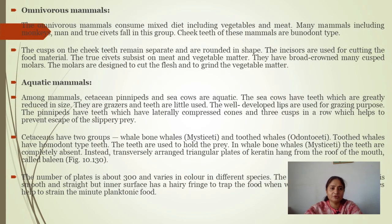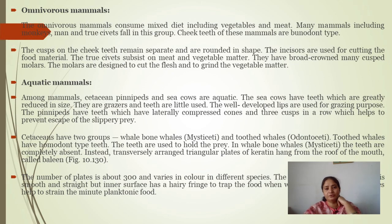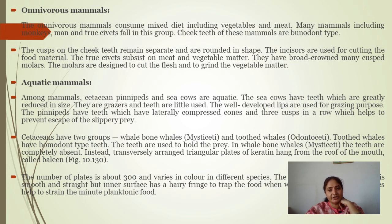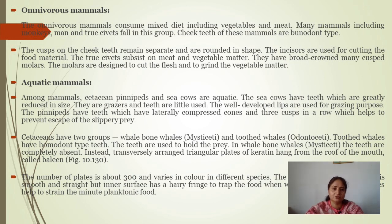Omnivores have a mixed diet and have bunodont type cheek teeth. Many mammals including monkeys, humans, pigs, and civets fall in this group. The cusps of the cheek teeth remain separate and rounded in shape.